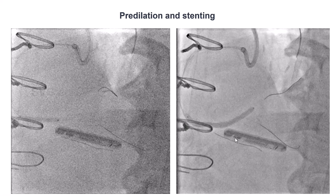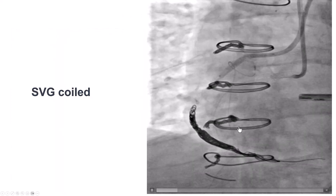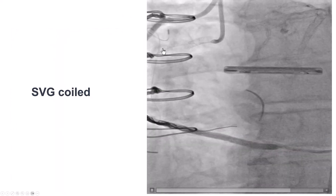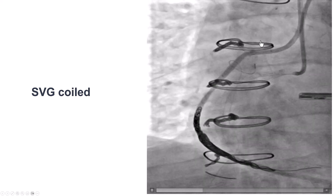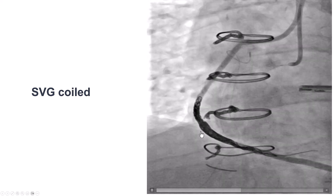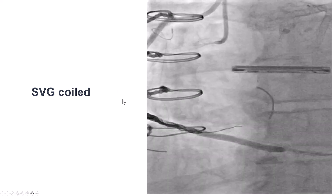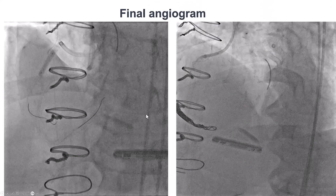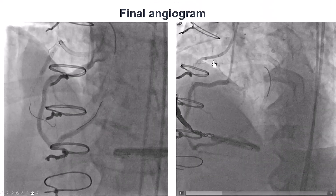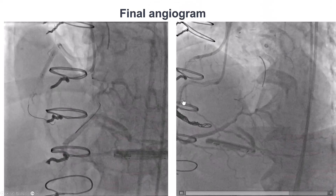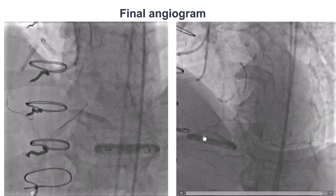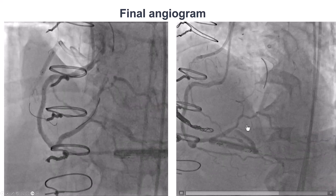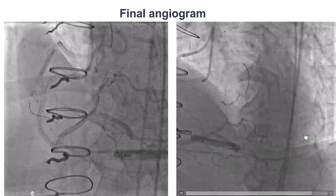We predilated, stented, and got a nice result. Because there was strong competitive flow from the vein graft — which had been ballooned to allow for this — we ended up placing coils to occlude it. And this is the final angiogram. We did have nice antegrade flow into the distal RCA, PDA, and right posterior lateral.